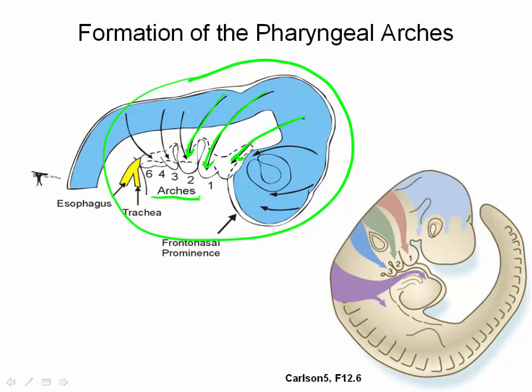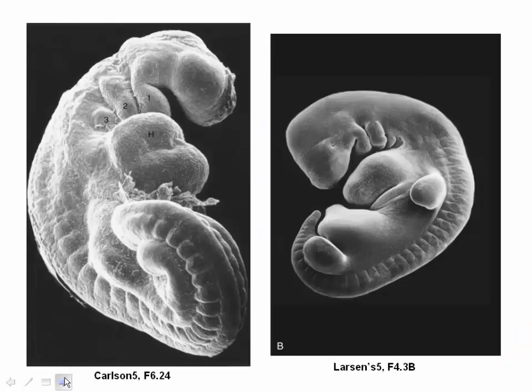A total of six pharyngeal arches are originally formed, numbered from one to six. The fifth one quickly degenerates, leaving only five arches in total, numbered as one, two, three, four, and six. The pharyngeal arches can be considered the building blocks of the anterior head and neck. Reduced or impaired migration of neural crest cells into the pharyngeal arches occurs in a number of craniofacial syndromes.